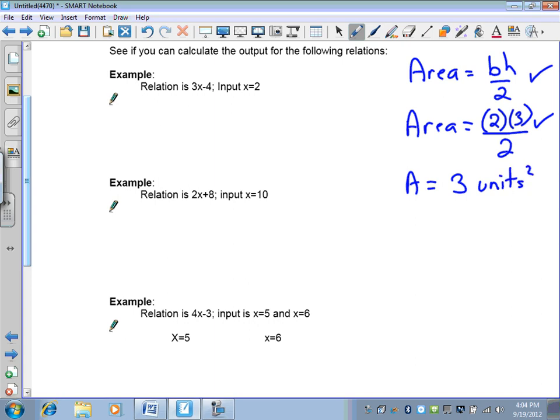Now we're going to use this process, but we're going to apply it to a relation. There won't be an equal sign. We're going to tell you what the x value is. For the first one, the relation is 3x-4. The first thing you do is you write down the relation. Then you take out the variable and you put in the number you're told to use and complete the rest of the relation. And now do the math. 3 times 2 is 6. 6 take away 4 is 2.